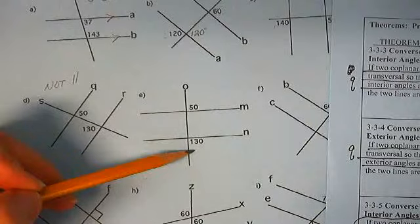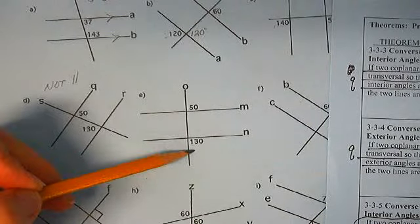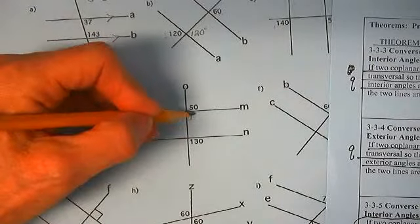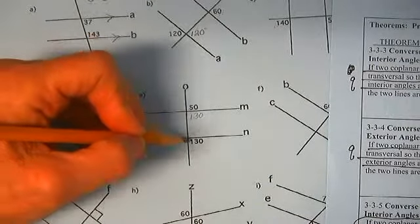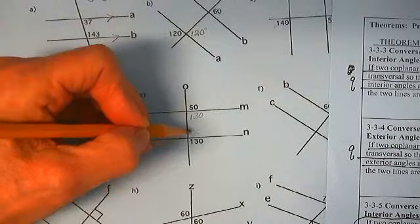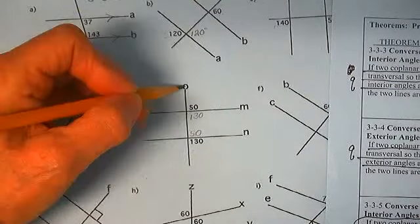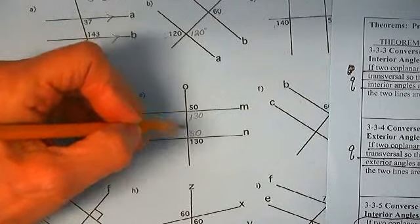We have same side exterior angles. If this is 50, this is 130. If this is 130, this is 50. We have a linear pair here, here and here.